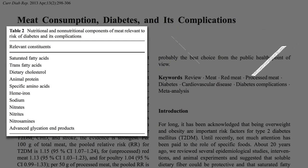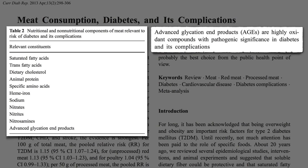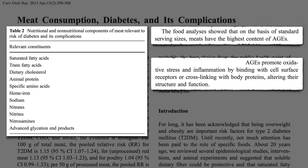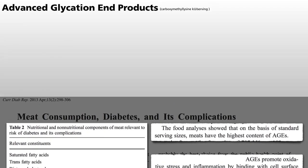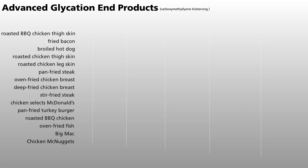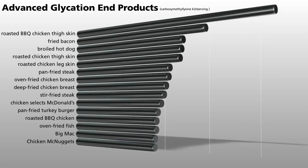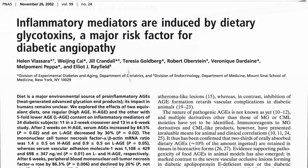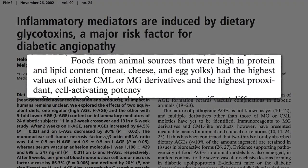Advanced glycation end products are another problem. They promote oxidative stress and inflammation. Food analyses show that the highest levels of these so-called glycotoxins are found in meat, particularly roasted, fried, or broiled meat, though any foods from animal sources can be potent sources of these pro-oxidant chemicals.